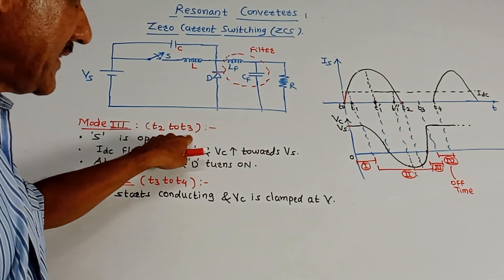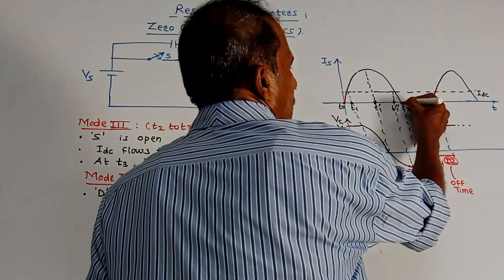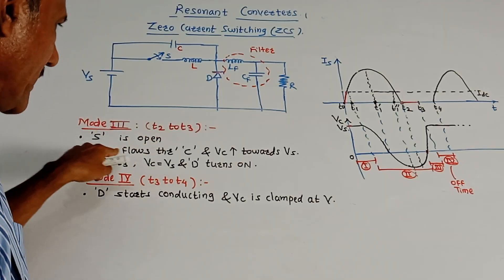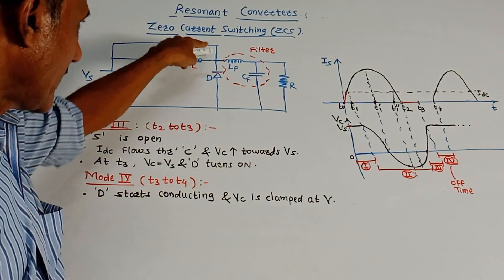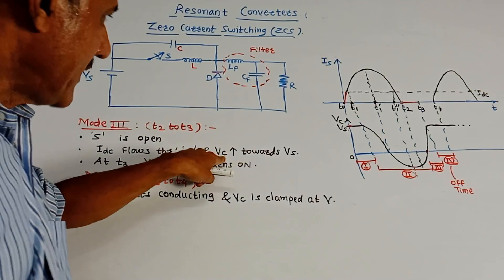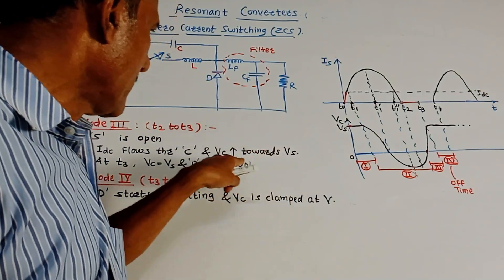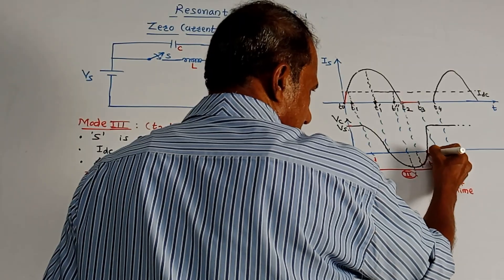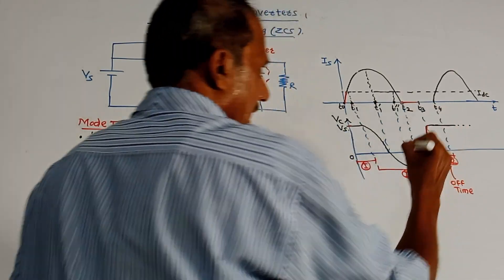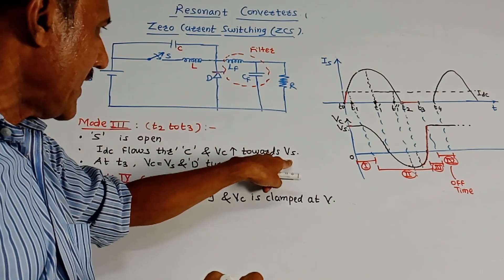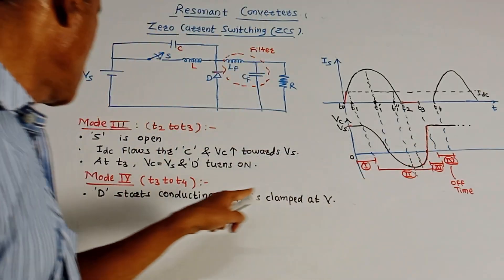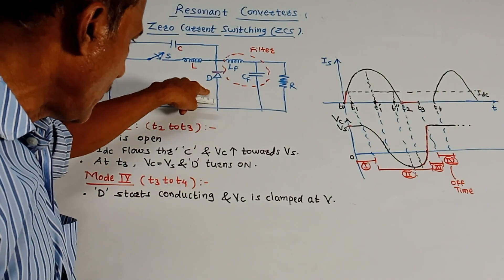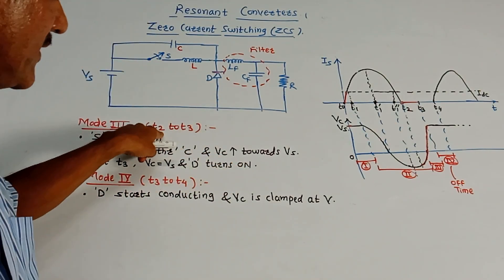Mode 3 is between T2 and T3. During this time, the switch is open. The output current IDC flows through the capacitor, and VC — the voltage across the capacitor — increases towards VS. VC attains the value VS at time T3, and because of this, freewheeling diode D is turned on.